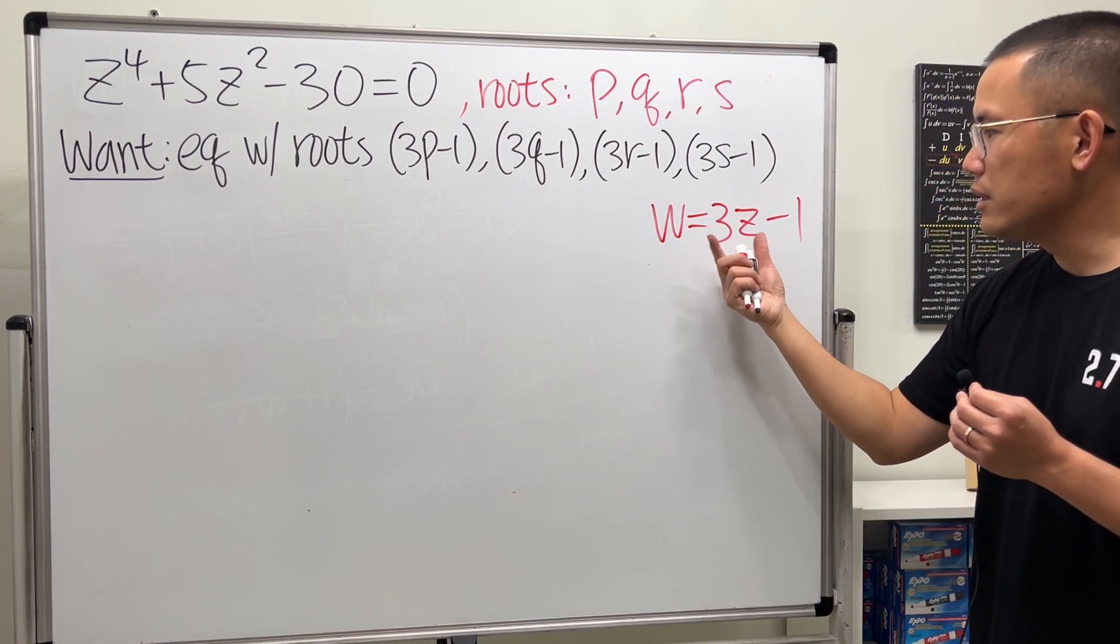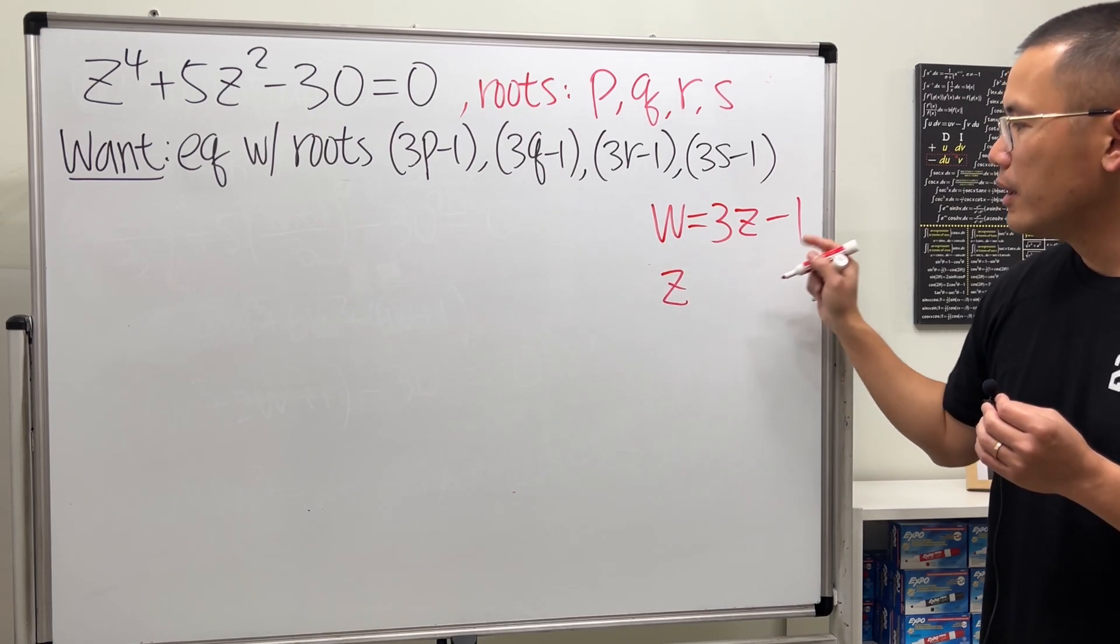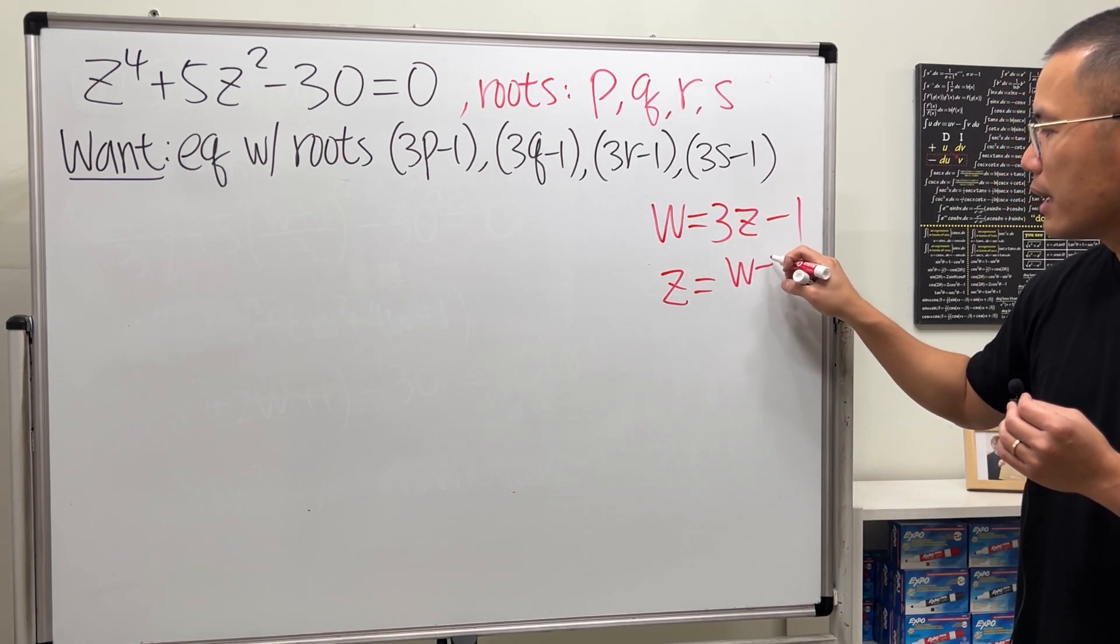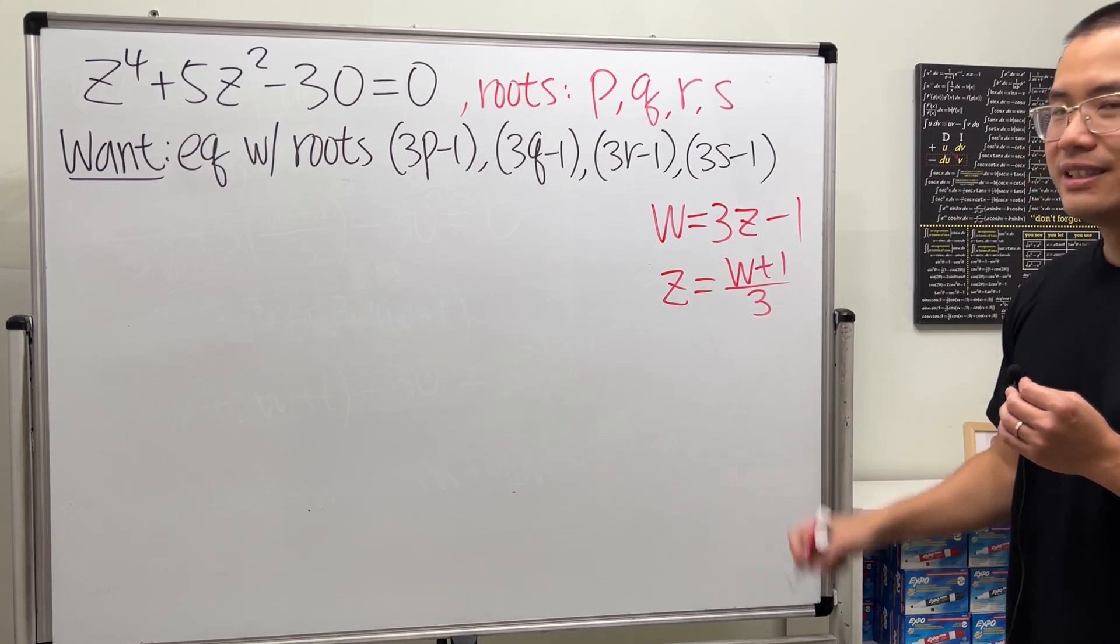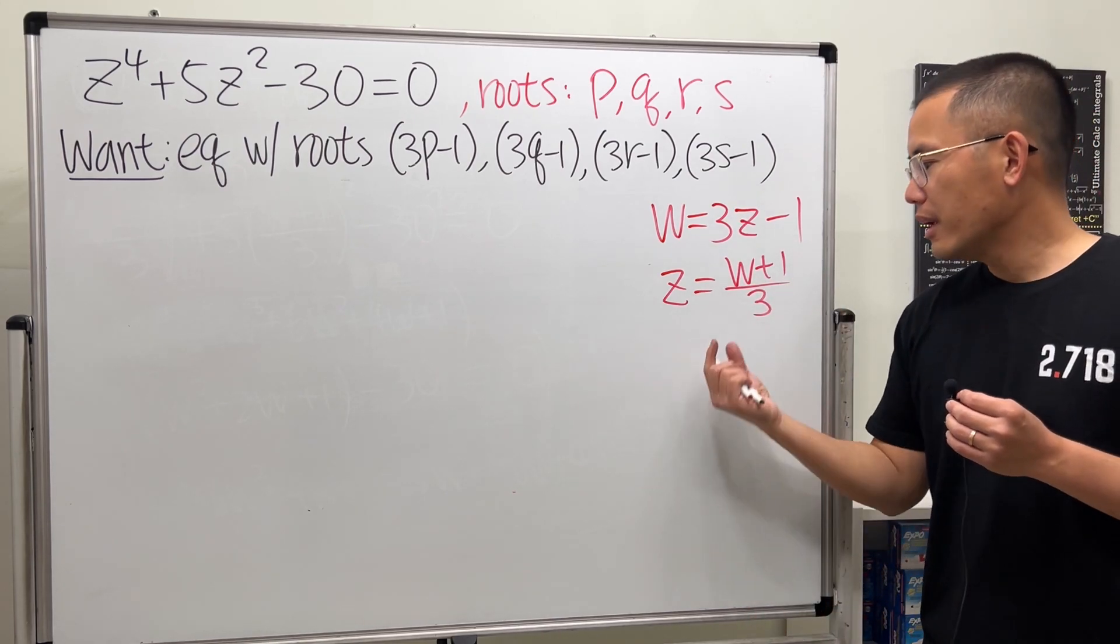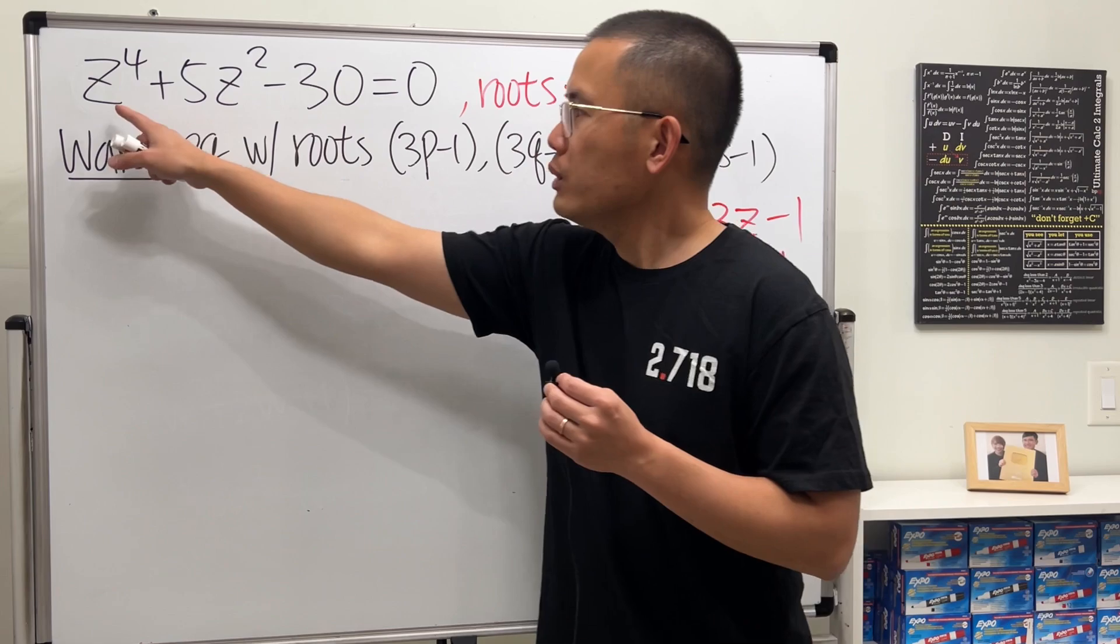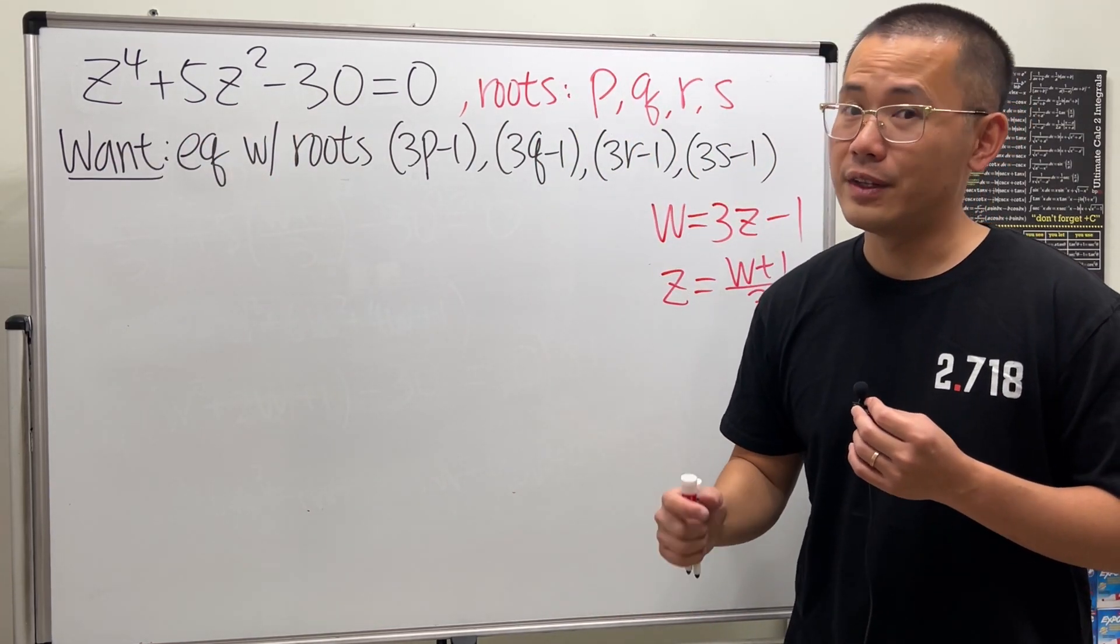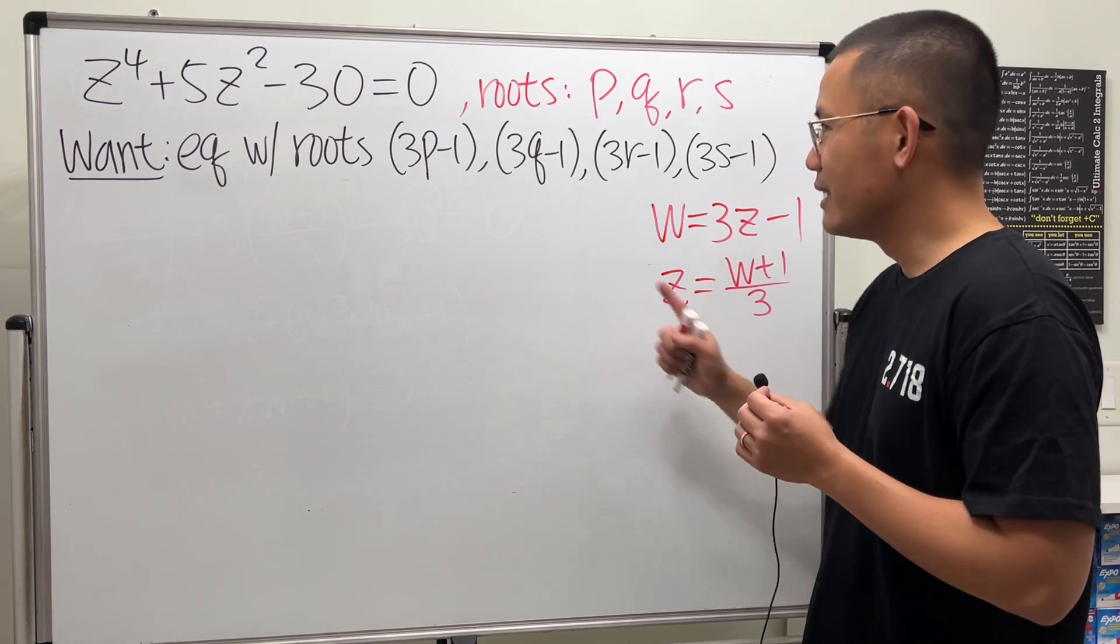And then I'm just going to solve for z in terms of w. So, add 1 to both sides, and then divide by 3, so we have z = (w + 1)/3. Then, all we have to do is put this into all the z's, and then multiply it out, combine the terms, and all that stuff, and then we'll be done.